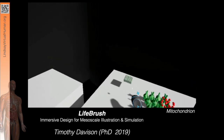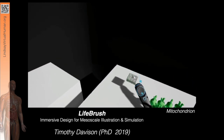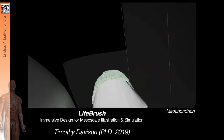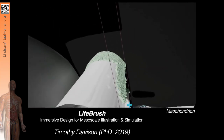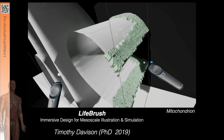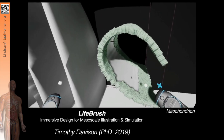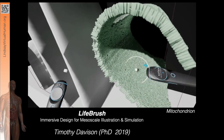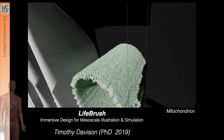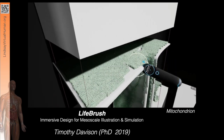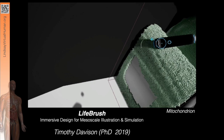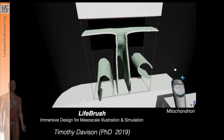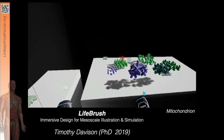The example palette here contains arrangements of molecular agents that we can paint into the scene on surfaces or volumes using our generative brush. Here we're painting lipids onto the surface of the mitochondria.